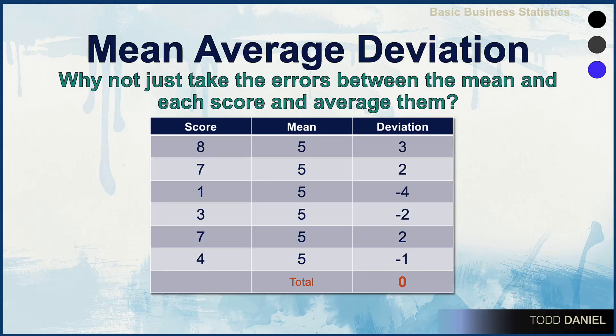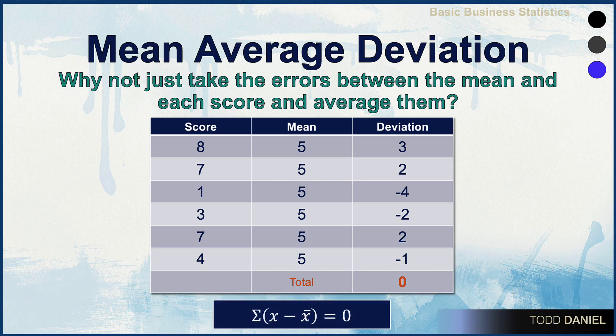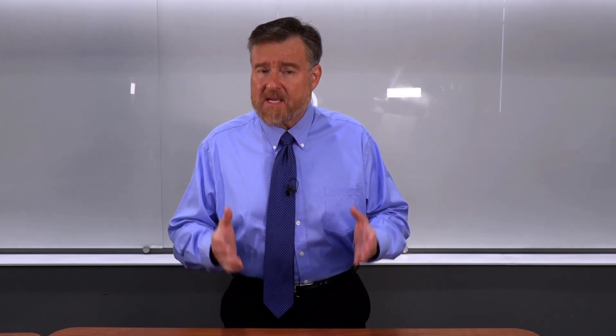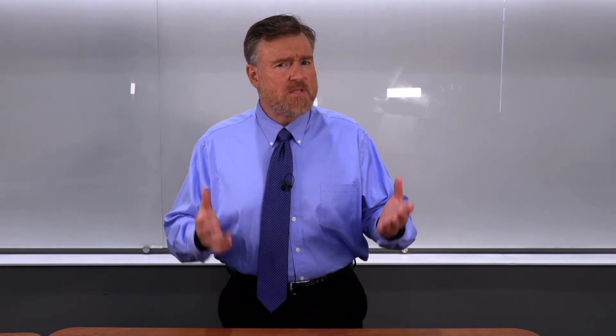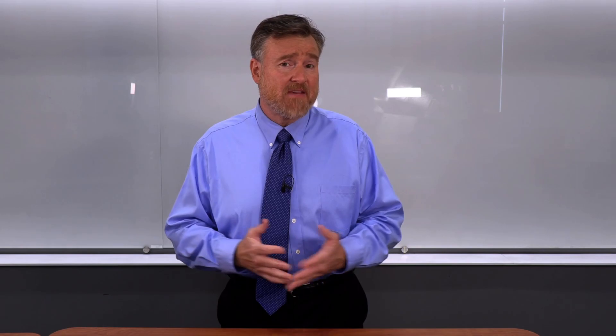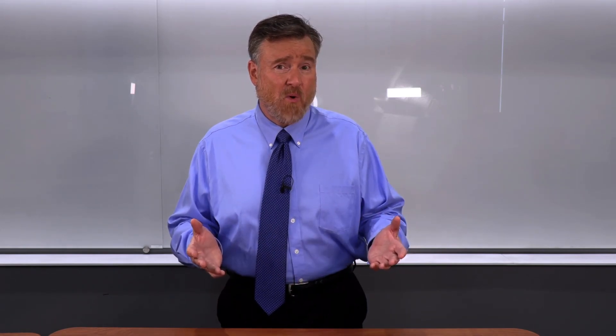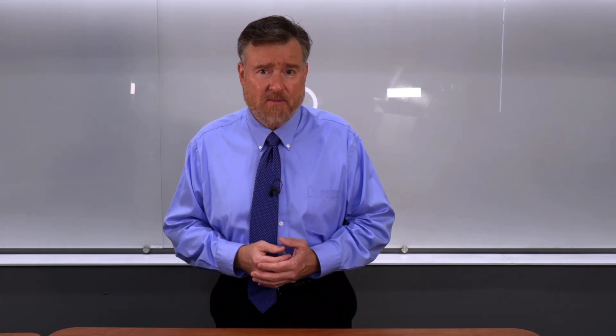Let's do that. When we add up the deviation scores in this data set, the deviations total to zero, meaning that we have zero variability in this data set. We know the data set does have variability because not all the scores are the same, and yet using the mean average deviation leads us to a point where we cannot measure variability.